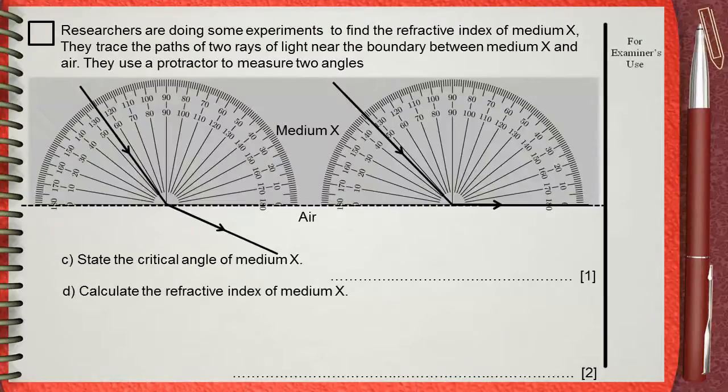Researchers are doing some experiments to find the refractive index of medium X. They trace the path of two rays of light near the boundary between medium X and air. They use a protractor to measure two angles.